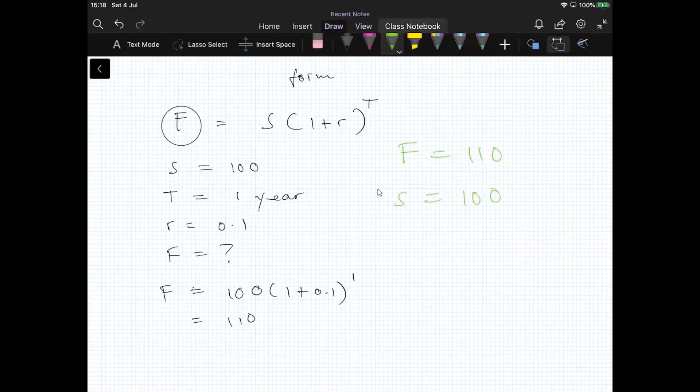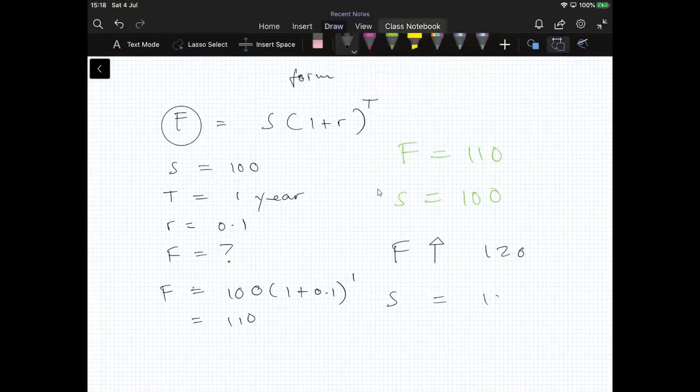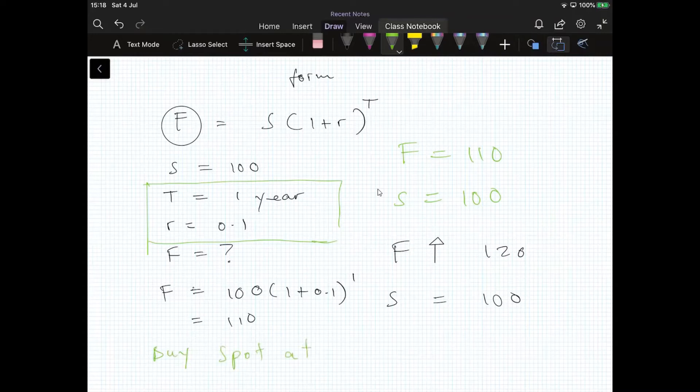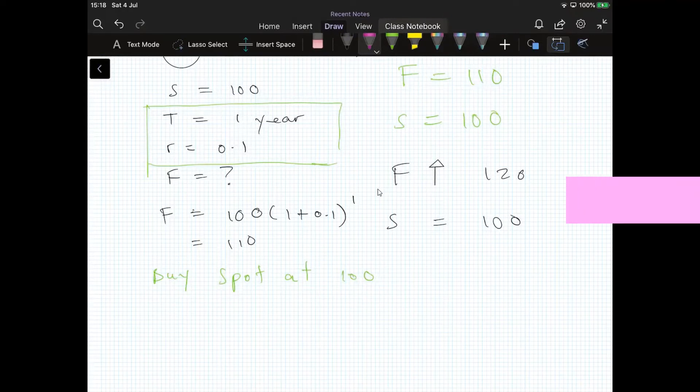If the futures price, for the sake of argument, increased, so if the futures price went up to 112 or 120 and the spot price remained at 100 and there was no change in the interest rate, no change in terms of the maturity of the futures position, then we would be able to generate profits here by buying the relatively cheap spot at 100. We would need to account for borrowing costs.